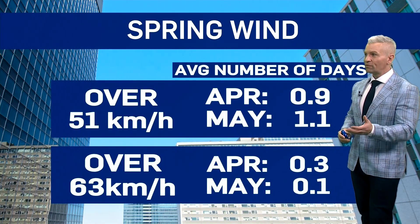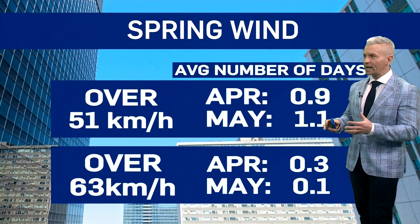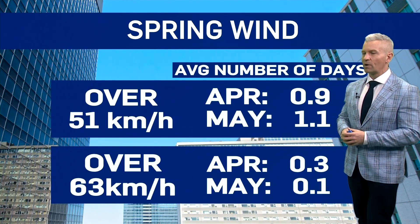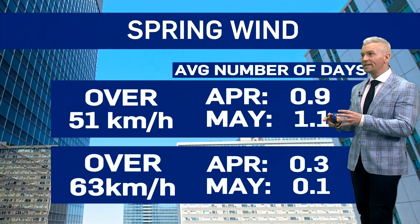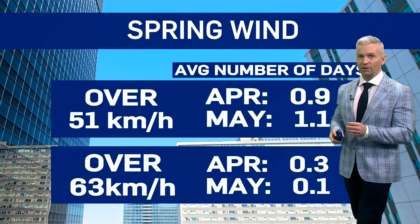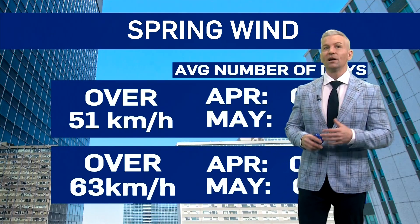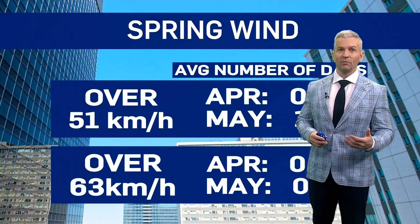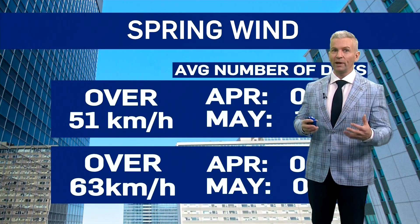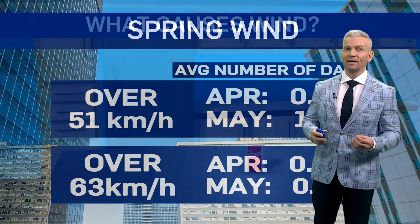As we take a look at wind gusts over 51 kilometers per hour, April sees on average about one day, May on average about one day as well. As of this April, we saw three days with gusts over 50 kilometers per hour — more than the average days with wind gusts above 51 kilometers per hour. So if you thought it felt a bit on the windy side this spring so far, that has been the case.